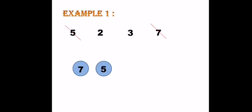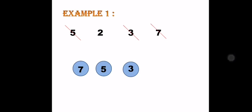Now, only three and two are left. Three is bigger than two. So, it will come next in the descending order. Cross out three. Two comes in the last place as it's the smallest number.